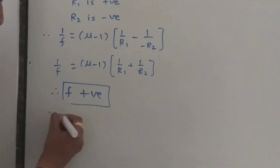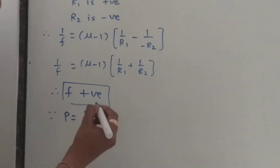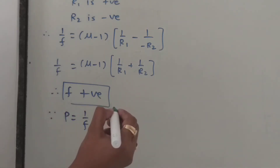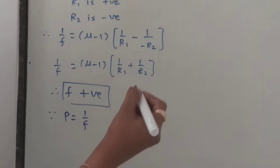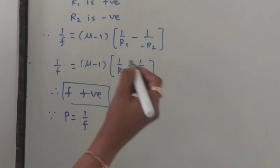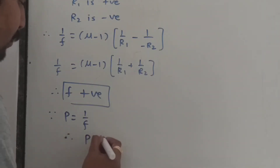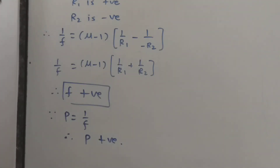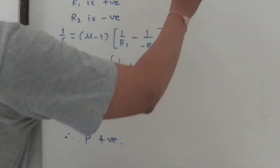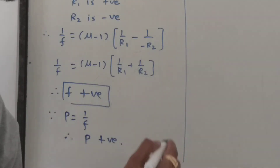Since P is equal to 1 by f, where P is the power of the lens expressed in diopters and f is the focal length expressed in meters, the power is also positive for a convex lens.